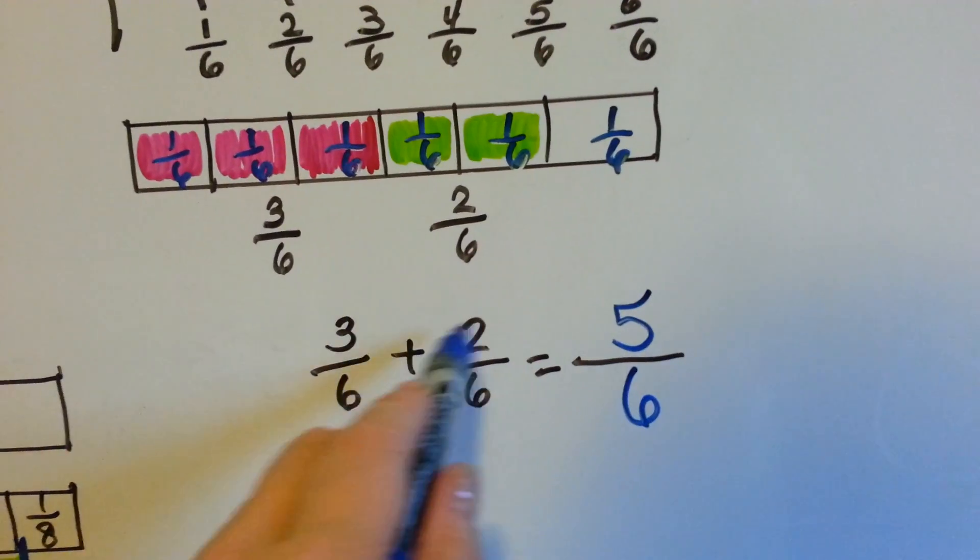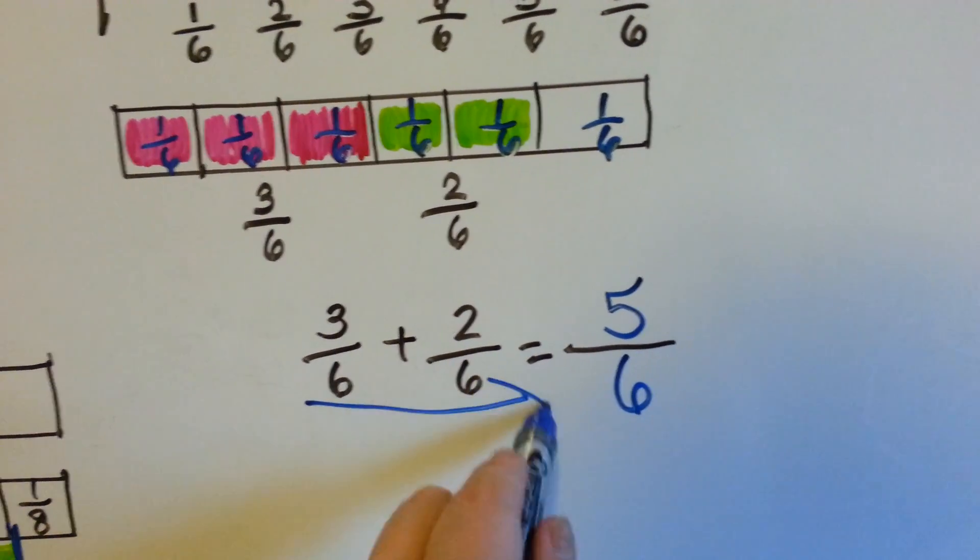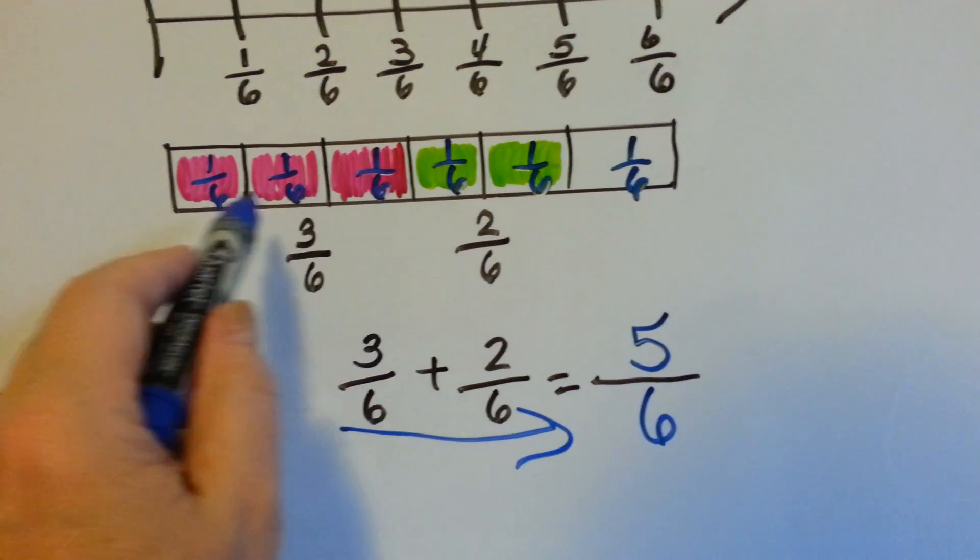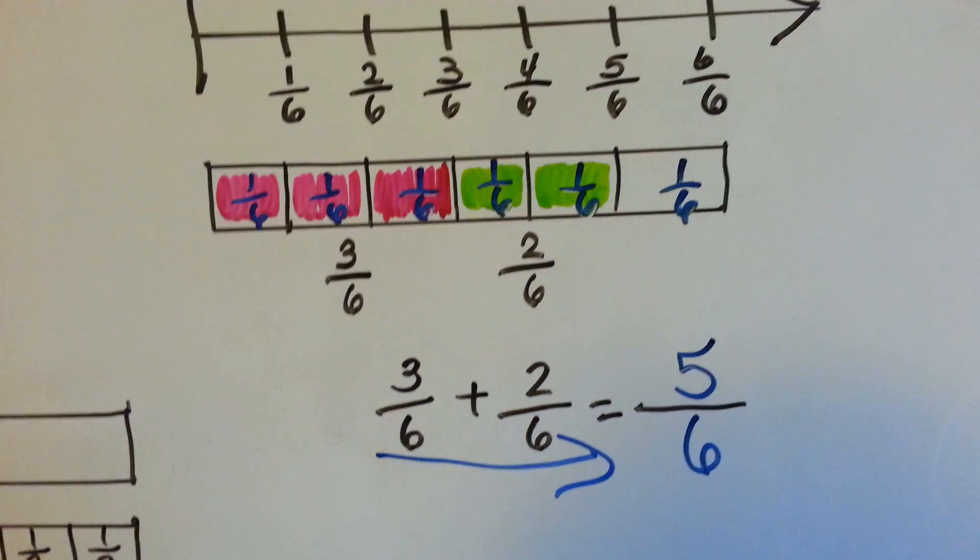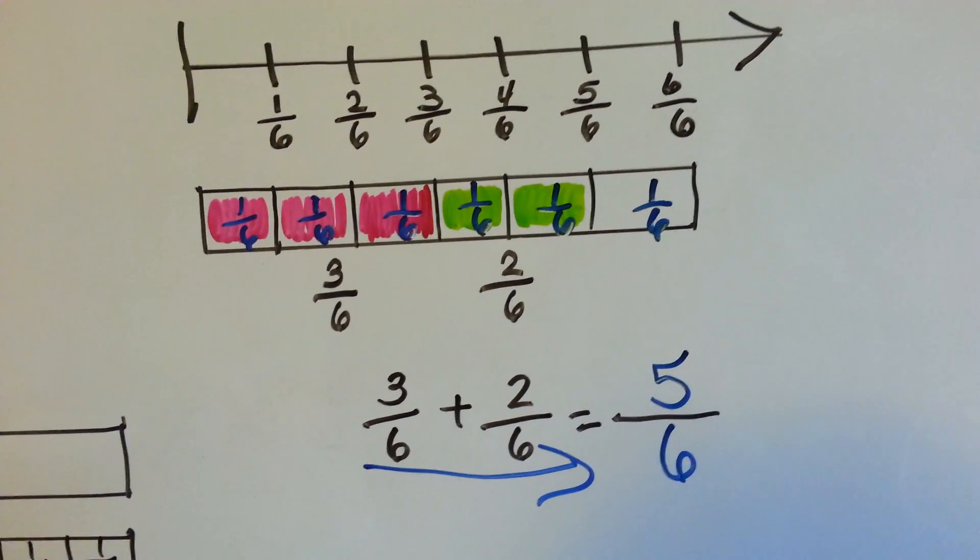3 plus 2 is 5, and we slid the denominator over because they're all sixths. We took little 1 sixth pieces. We took 5 of them.